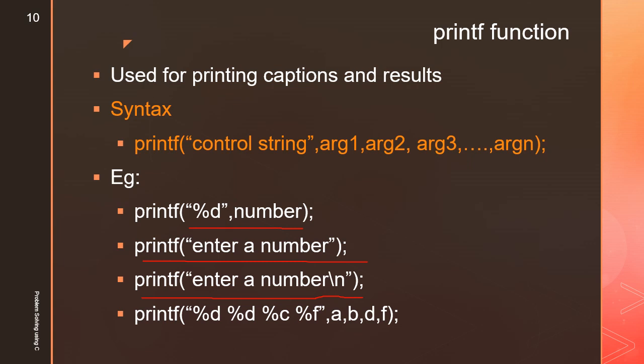After displaying a caption, the control cursor moves to the beginning of the next line. scanf can handle multiple data types and multiple variables as input, and printing multiple values with printf works similarly using corresponding control strings.